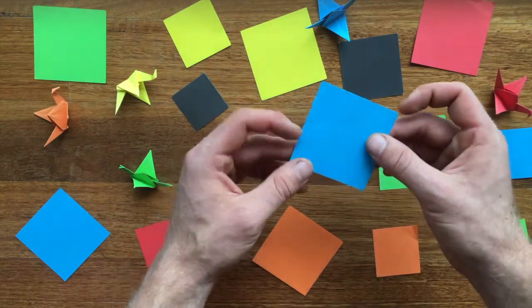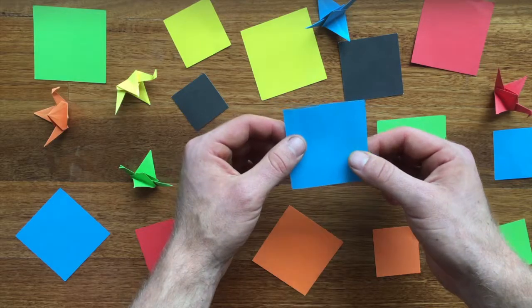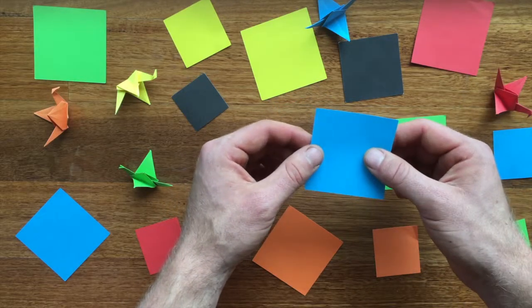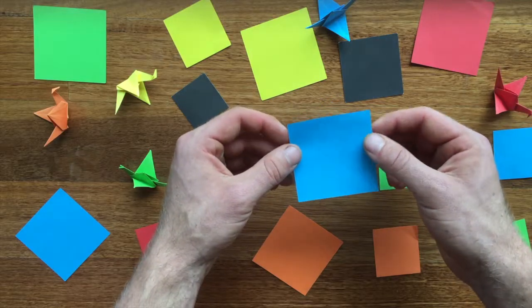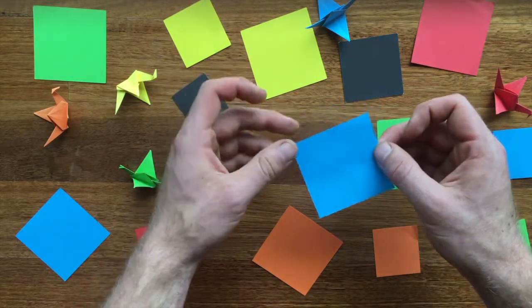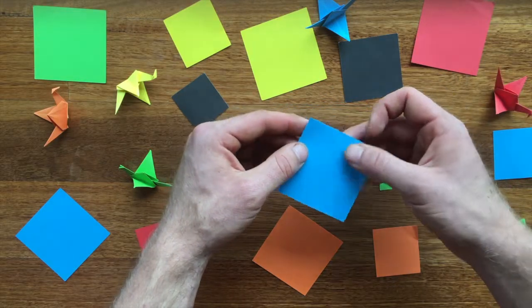If you could ensure that you've got an exact square, a perfect square, you'll find that the crane ends up more symmetrical and that it's a little bit easier to complete some of the folds. The other thing I'd recommend is that you ensure each fold is as precise and as crisp as possible. This also makes it easier to end up with a beautiful crane.